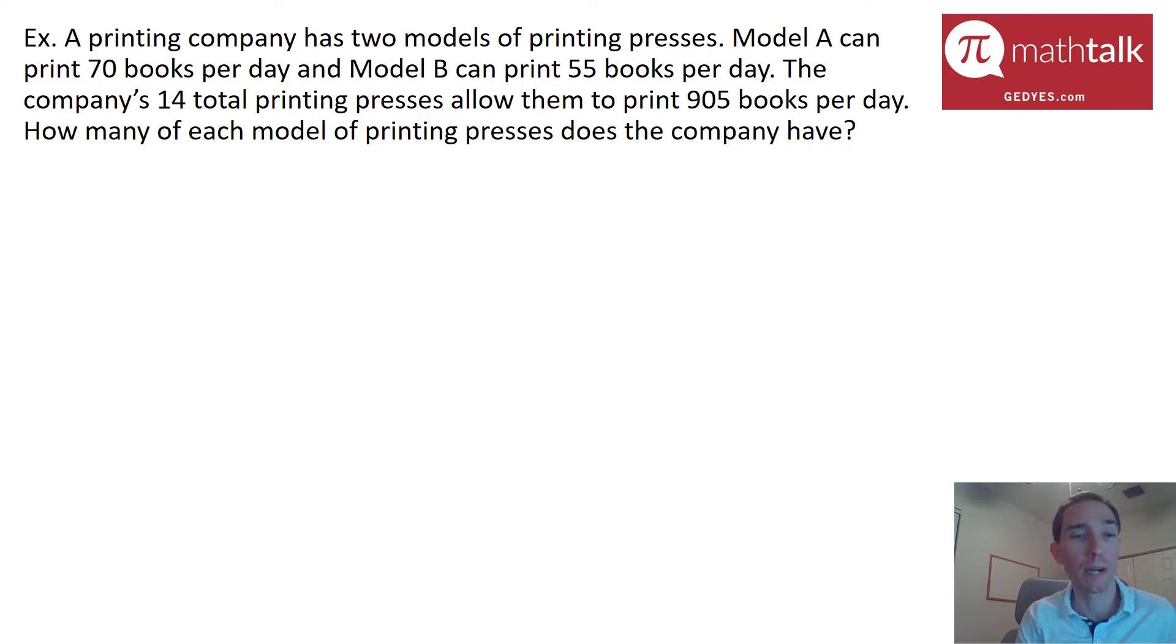So we have two equations that can be created from this. We have the total number of printing presses, which is just model A plus model B, and they tell us there's 14 total. And then they tell us that model A has 70 books it can print, model B has 55 books it can print, and the total it does per day is 905. So that's the two pieces of information I want to figure out.